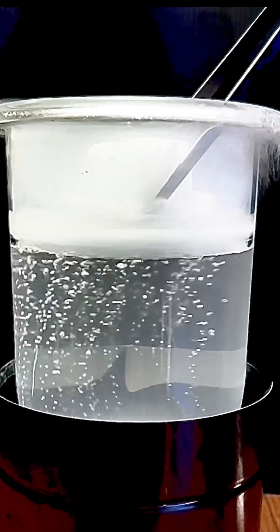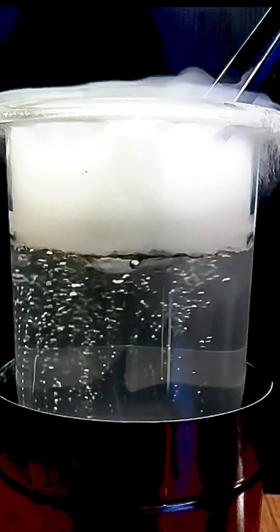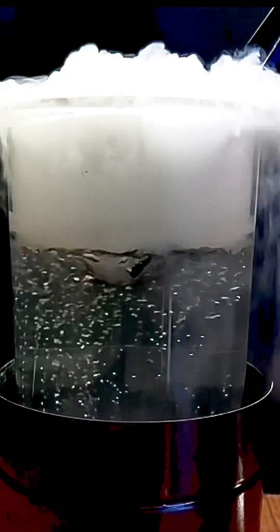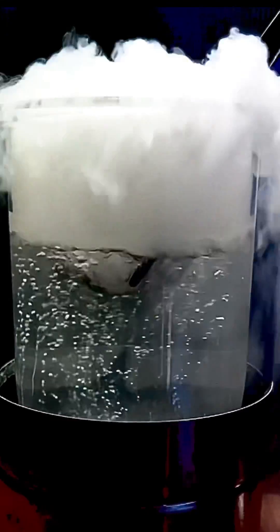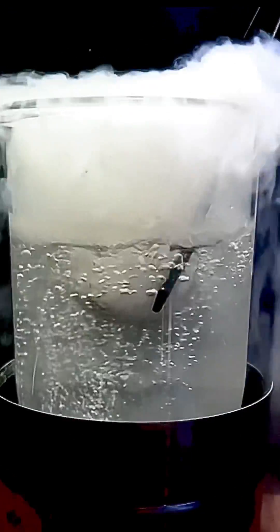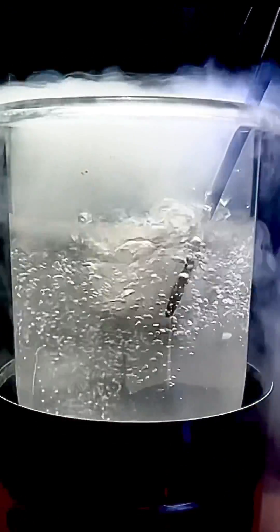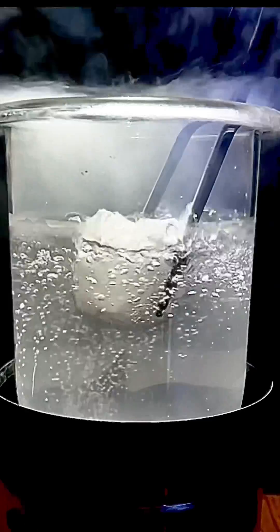But I really want to show you what happens when I submerge a piece of dry ice under liquid nitrogen and leave it there. First, we notice a thick cloud is vigorously produced. This is probably due to the deposition of carbon dioxide into tiny dry ice cloud particles like I just talked about.